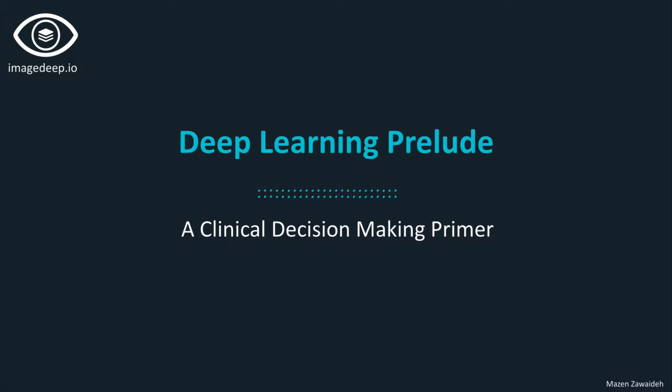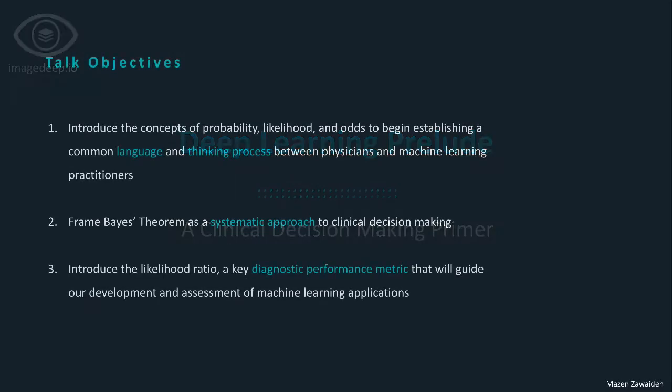This foundation will guide our thinking in many subsequent discussions of machine learning applications in diagnostic imaging. Our objectives are to grasp the concepts of probability, likelihood, and odds to begin establishing a common language and thinking process between physicians and machine learning practitioners, understand Bayes' theorem as a systematic approach to clinical decision-making, and introduce the likelihood ratio — a key diagnostic performance metric that will guide our development and assessment of machine learning applications. Ultimately, these concepts will help us generate focused discussions and questions when brainstorming ideas with a multidisciplinary team.